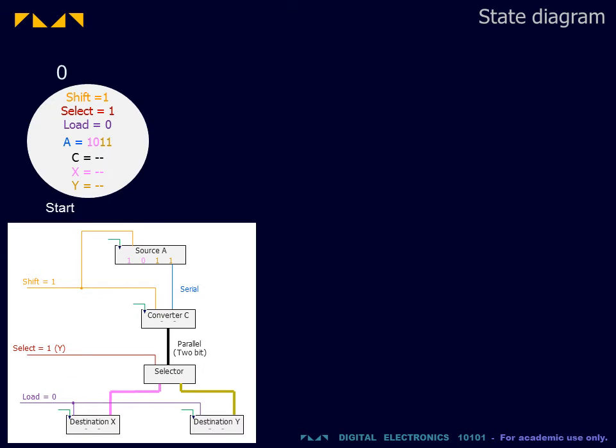For the first operation, we will set the serial shift of the source and converter to 1 and the parallel load of the destinations to 0. We will also select the destination y in readiness for the parallel load. Dashes indicate don't care values.